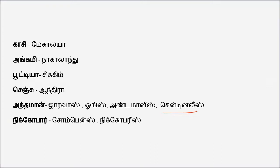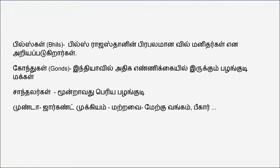If you look at these people — Onges, Sentinelese, Shompens — they are not fully civilized in the modern sense; they live a primitive lifestyle. That is why it is most important to list these tribes carefully. We can take a limited list of the most important ones.